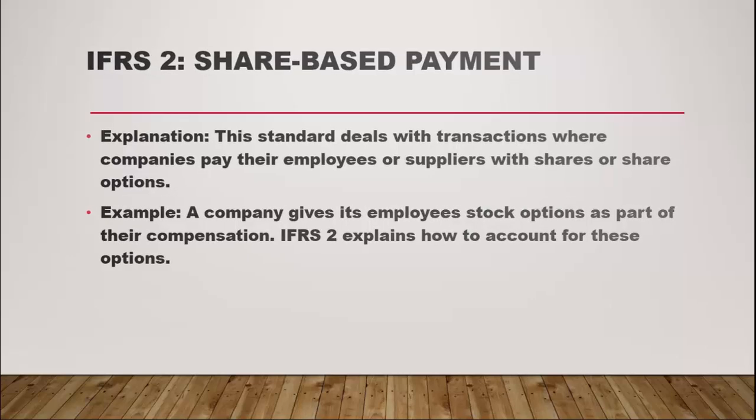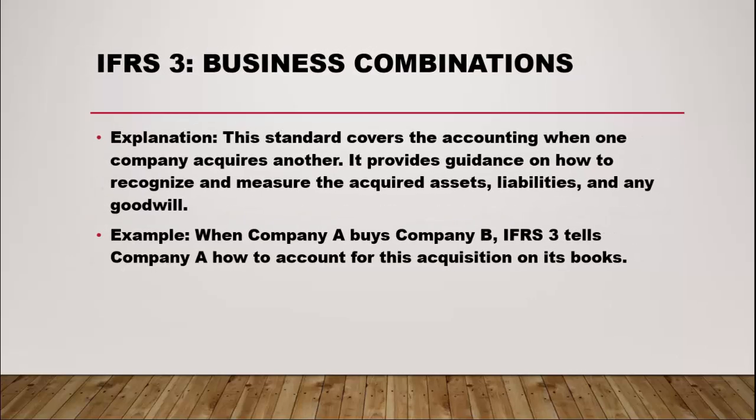IFRS 3 – Business Combinations. This standard covers the accounting when one company acquires another. It provides guidance on how to recognize and measure the acquired assets, liabilities, and any goodwill. When company A buys company B, IFRS 3 tells company A how to account for this acquisition on its books.